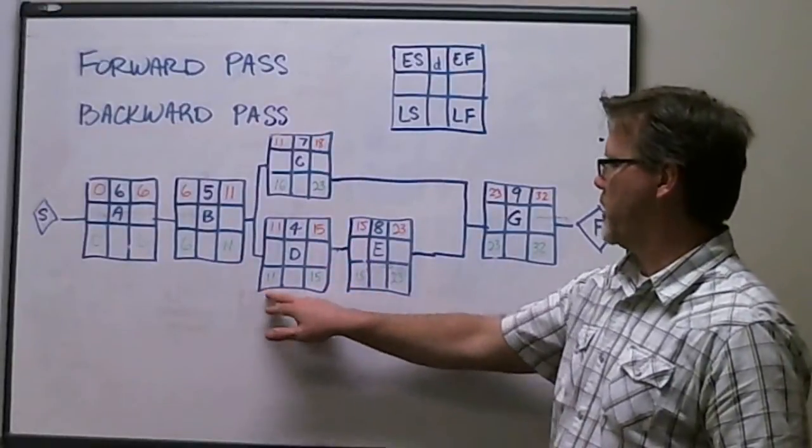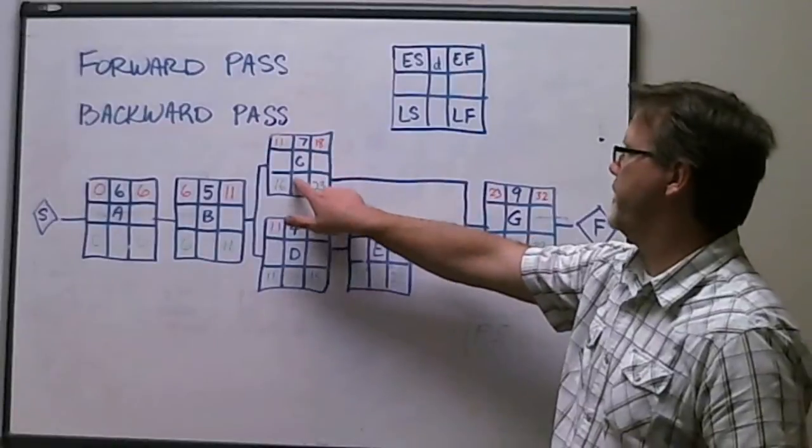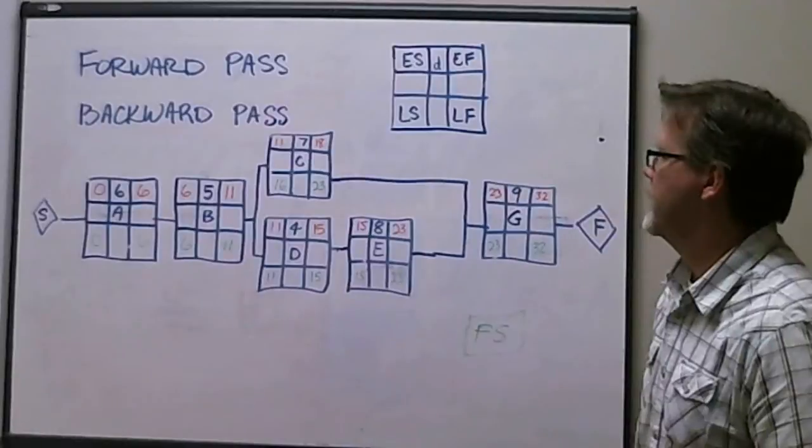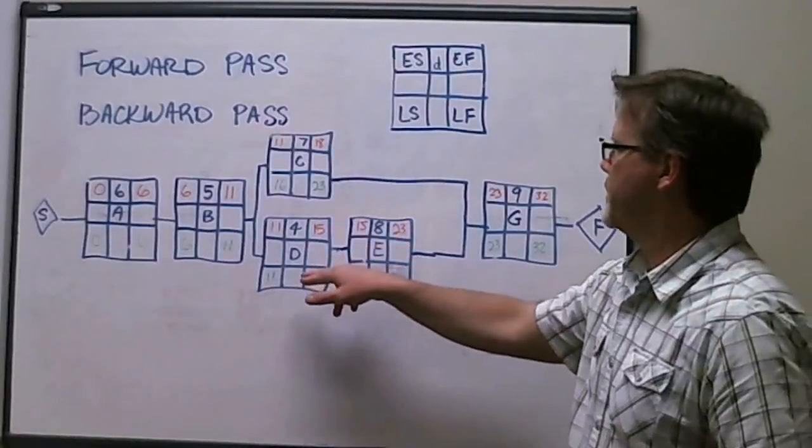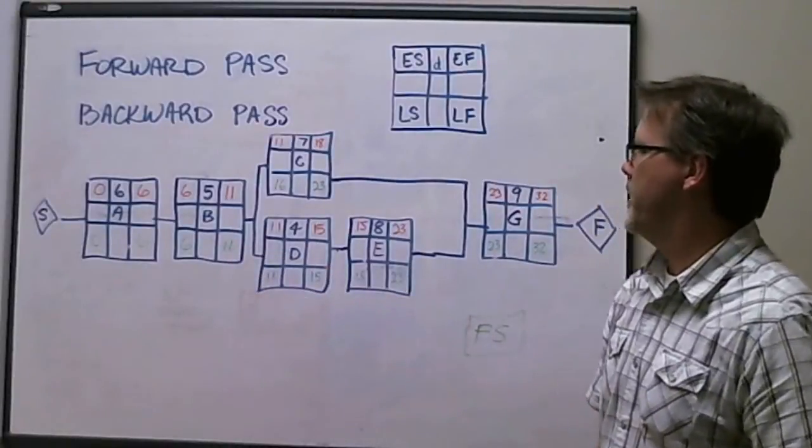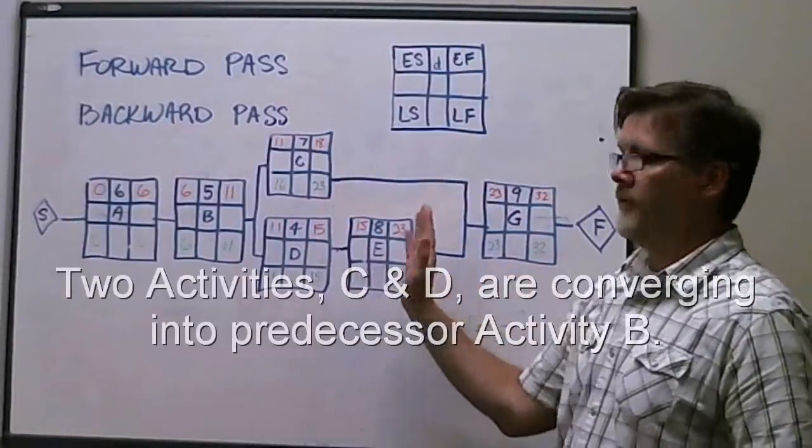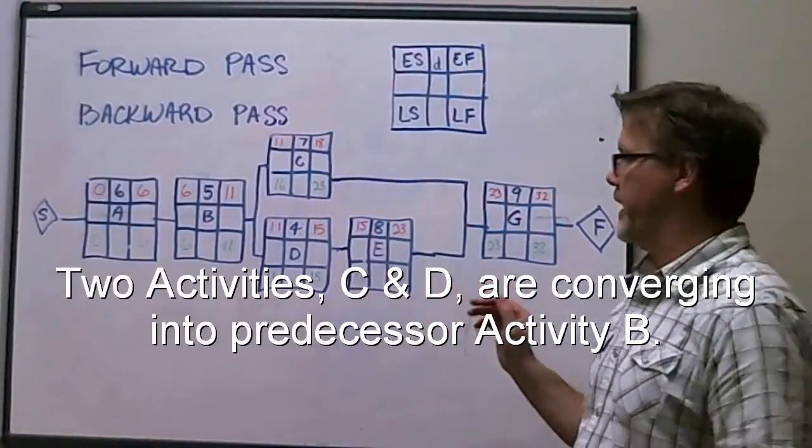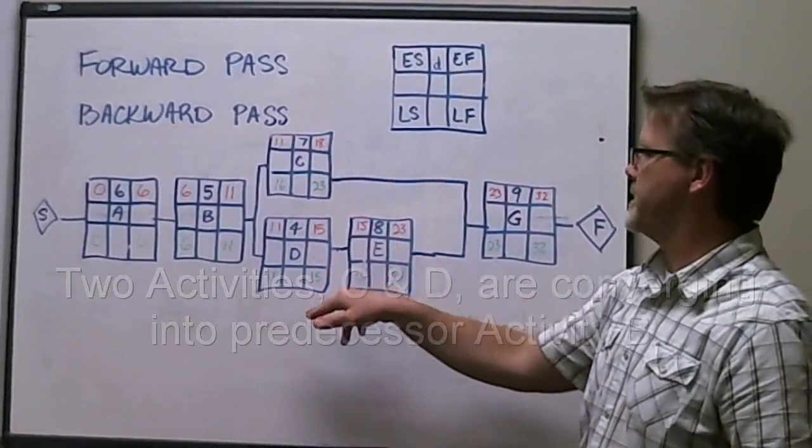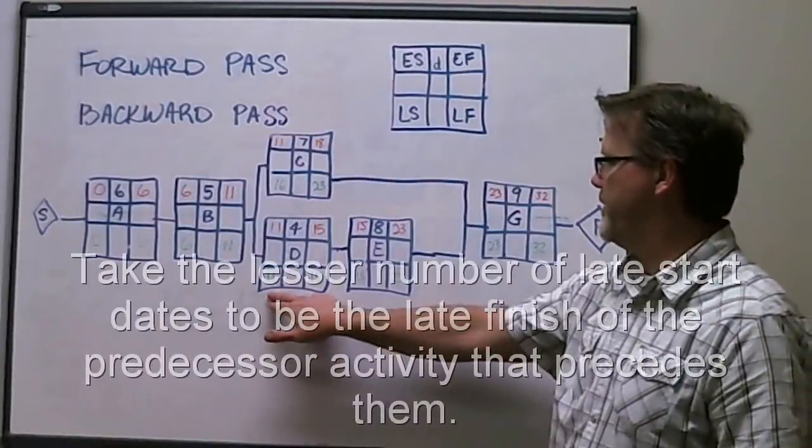Again, do the math, the late start date for D is 11. Doing the math here for activity C, the late start date here is 16. So when we move then to see what is going to be the late finish date for activity B, we take the lesser of the two late start dates of the successor activities in our right to left pass. So in this particular case, the lesser of the two late starts is activity D, which is day 11. This is the day that we carry over to activity B.